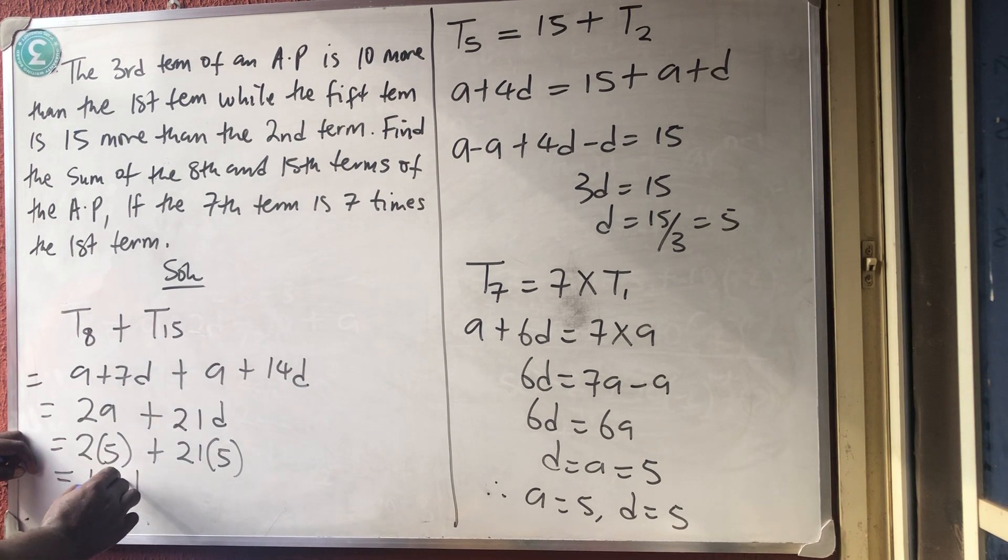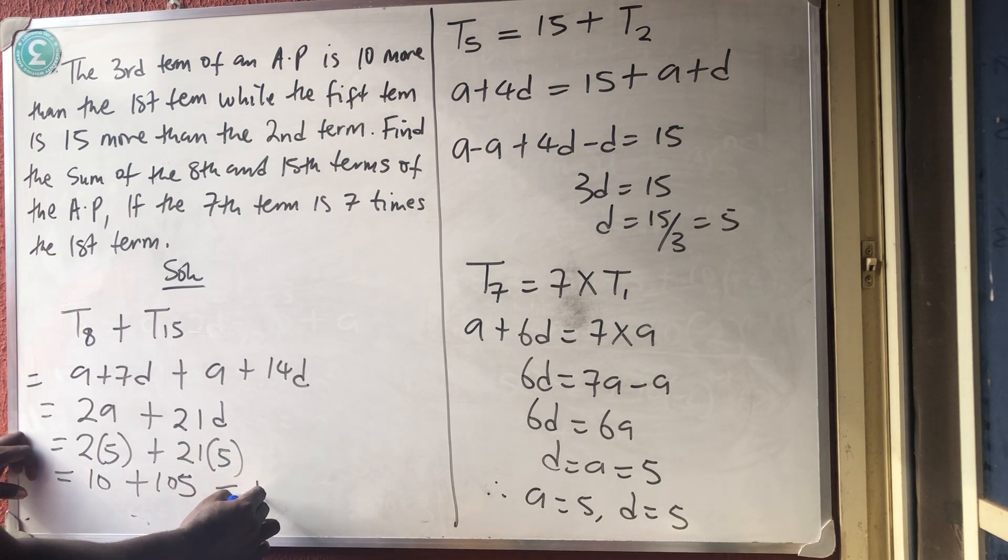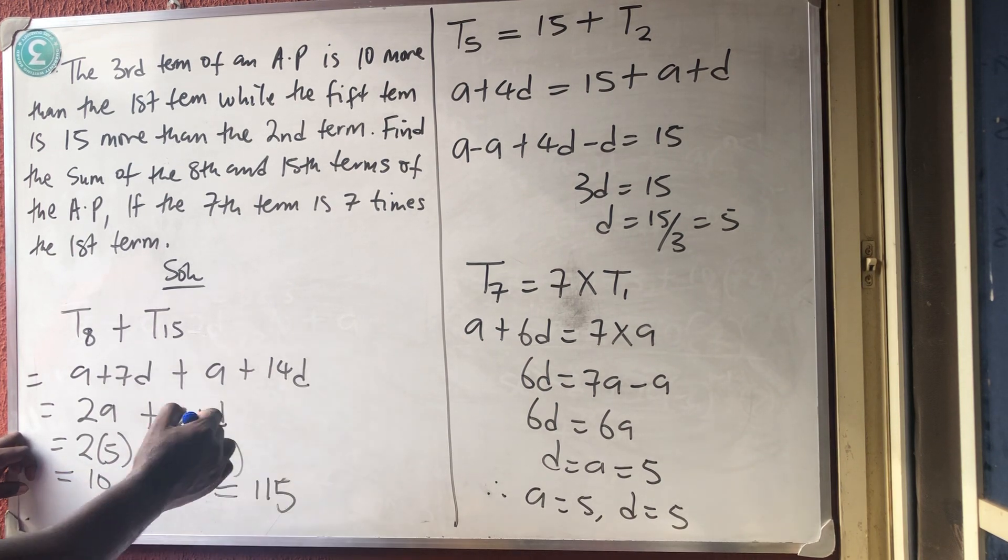2 times 5 is 10 plus 5 times 21 is 105. 5 times 2 is 10. So, if you add the 2, I'm having 115 as my result. See?